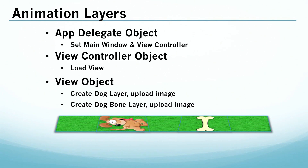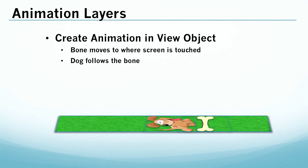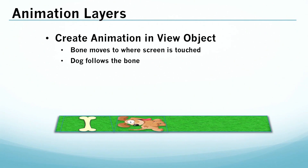In our app, the app delegate will basically just register the app as loaded, and the view controller will simply just load the view. In this app, the view object will do most of the heavy lifting. This is where we'll put the code to move the bone when the screen is touched, and where we'll put the code that allows the dog to follow the bone's movement. Now, enough talk — let's do some coding.